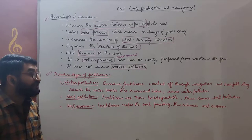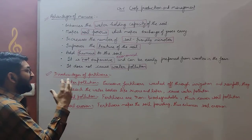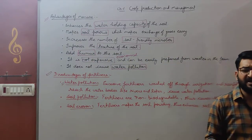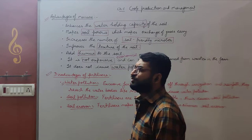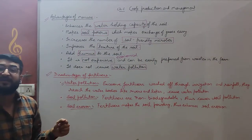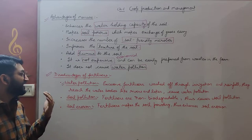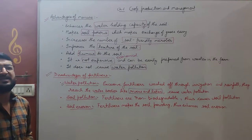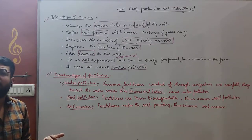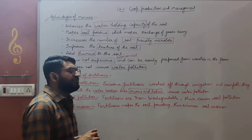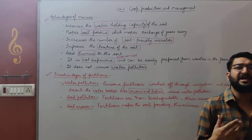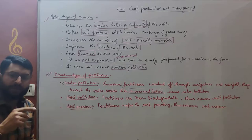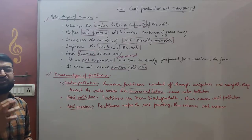Also, through irrigation and rainfall, excessive fertilizers are washed off the fields and mixed with water bodies like rivers and lakes. When fertilizers are added to those rivers and lakes, that causes water pollution. That water pollution may harm aquatic organisms — the fishes and organisms living inside the rivers and lakes will be harmed, and the fertilizers will pose a threat to their life.